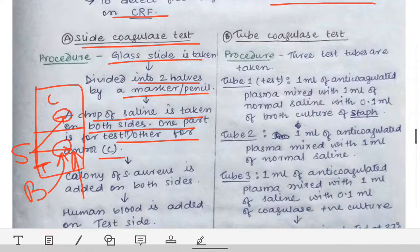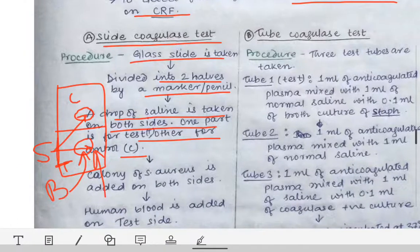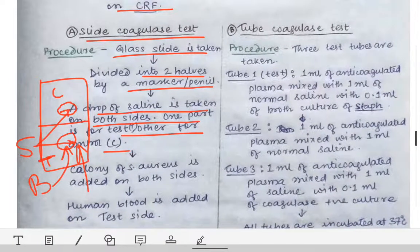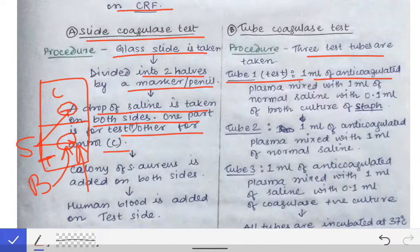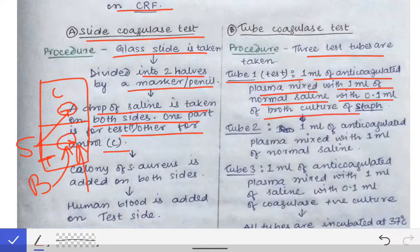In the tube coagulase test, three clean glass test tubes are taken. Tube one is the test tube, which contains one ml of anti-coagulated plasma mixed with one ml of normal saline, plus 0.1 ml of broth culture of S. aureus.